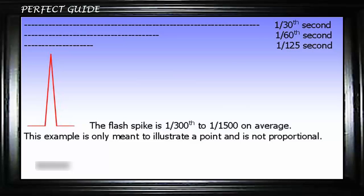Think of shutter speed on a timeline: if 1/60th of a second is depicted as 3 inches long, then 1/125th would be 1.5 inches long because it's half the time, and 1/30th would be 6 inches long because it's double the time. This relationship is the same no matter what shutter speeds you use. From this chart, you can see that shutter speed only controls ambient light exposure, not strobe exposure — f-stop and aperture control the strobe exposure.